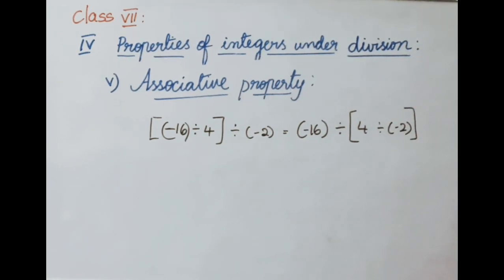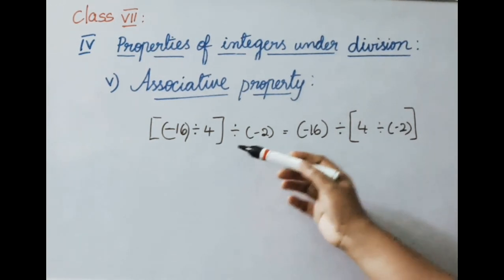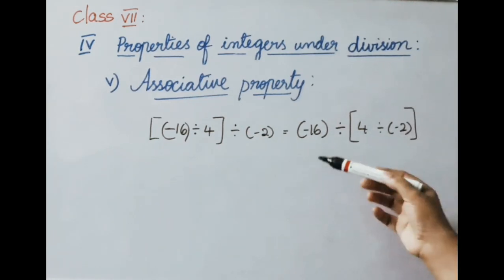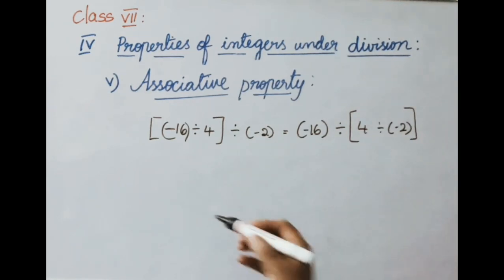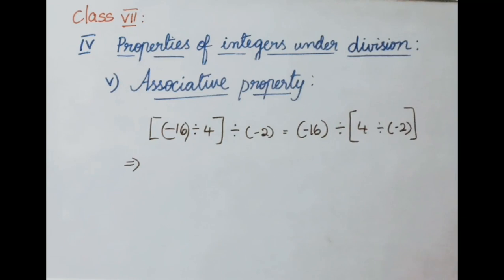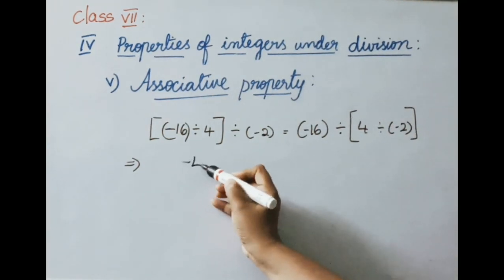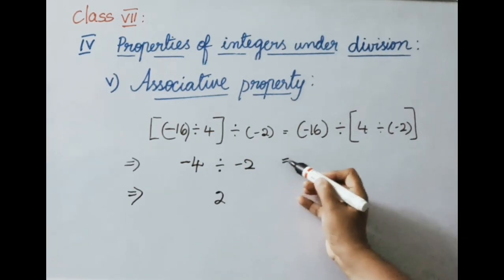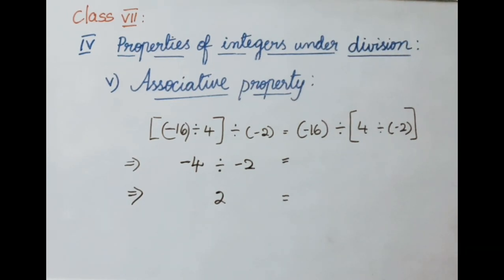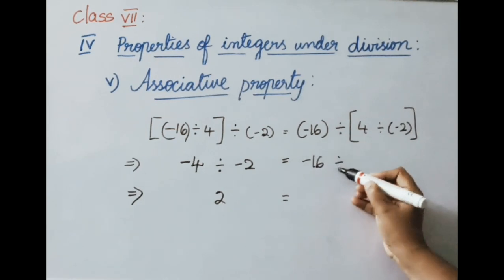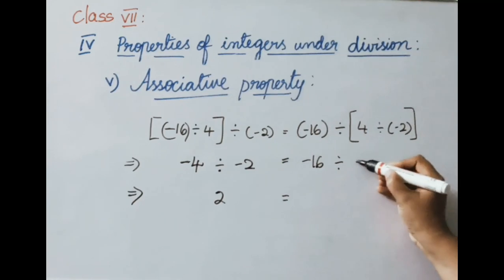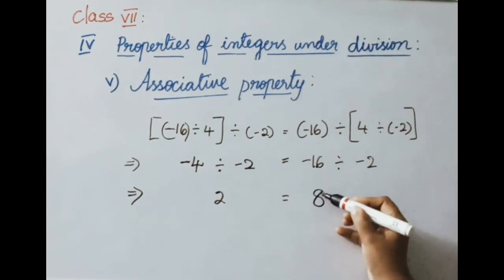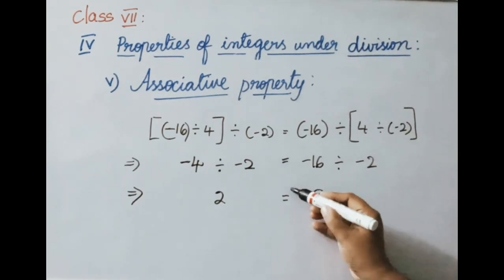Associative property under division: example — (A divided by B) divided by C is (minus 16 divided by 4) divided by minus 2. LHS: minus 16 divided by 4 equals minus 4, then minus 4 divided by minus 2 equals 2. RHS: A divided by (B divided by C) is minus 16 divided by (4 divided by minus 2). 4 divided by minus 2 equals minus 2, then minus 16 divided by minus 2 equals 8. LHS is 2 and RHS is 8 — they are not equal.